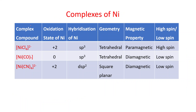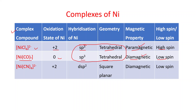This table summarizes the three nickel complexes. [NiCl₄]²⁻: Ni²⁺, sp³ hybridization, tetrahedral, paramagnetic, high spin. [Ni(CO)₄]: Ni⁰, sp³ hybridization, tetrahedral, diamagnetic, low spin. Note: both are sp³ tetrahedral, but one is paramagnetic and the other diamagnetic — you must be able to explain this difference. [Ni(CN)₄]²⁻: Ni²⁺, dsp² hybridization, square planar, diamagnetic, low spin.